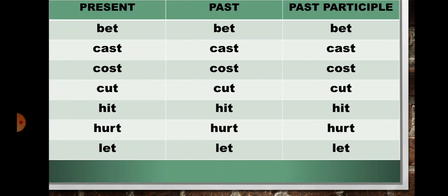In present if it is 'cost', so in past also it will be 'cost', and in past participle form also it will be 'cost'. In present if it is 'cut', so in past also it will be 'cut', and in past participle form also it will be 'cut'.